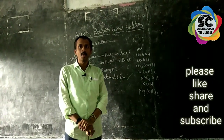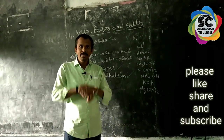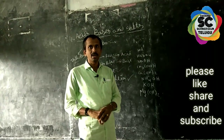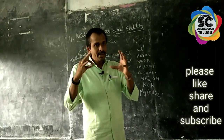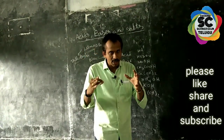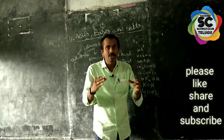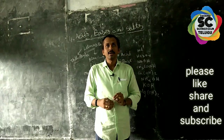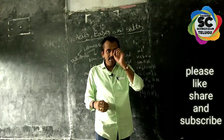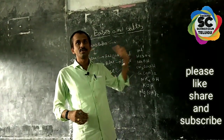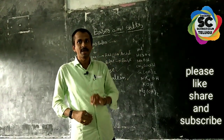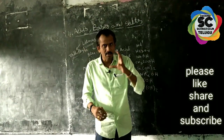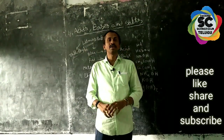We will use natural indicators such as onion in 10th class. The onion liquid is prepared and when it interacts with a base it changes the cloth. The idea of this topic is that natural indicators are prepared from natural materials.